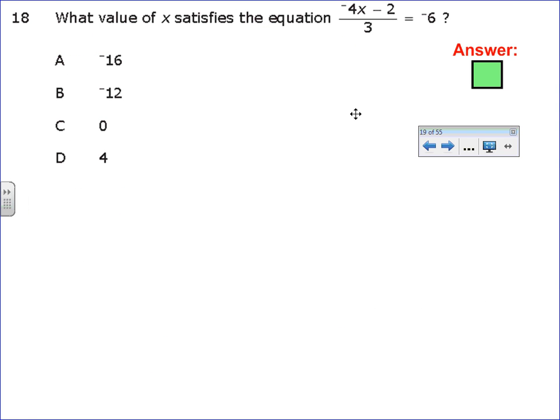For 18, it said the value of X. So, basically, they're asking you to solve for X. I need to get X by itself. I'm going to rewrite this down here. So, I've got negative 4X minus 2 over 3 equals negative 6. The first thing I need to do is get rid of this negative 3. If it's being divided, the opposite is multiplication. So, when I multiply, this cancels, and I bring down the numerator.